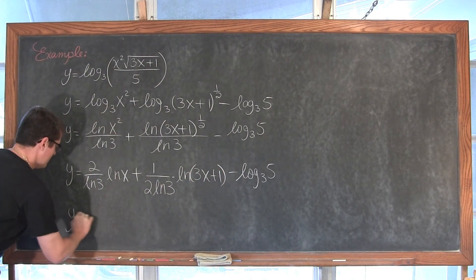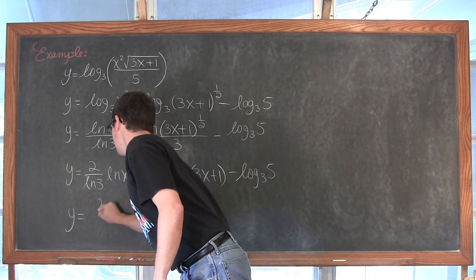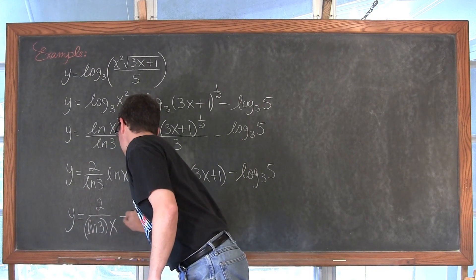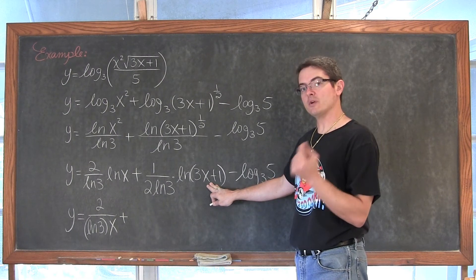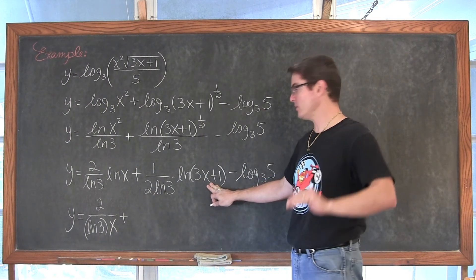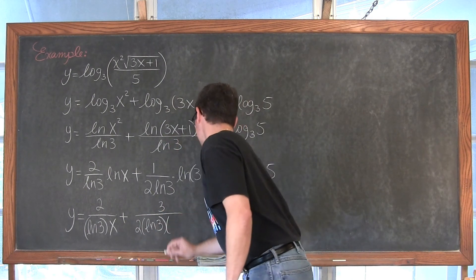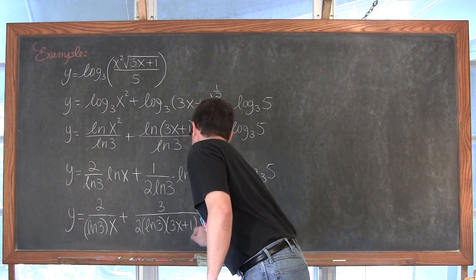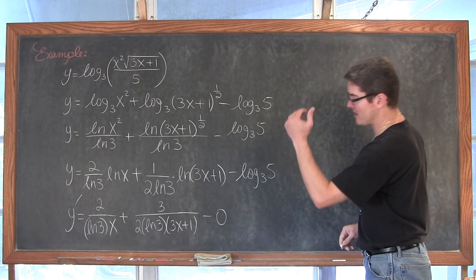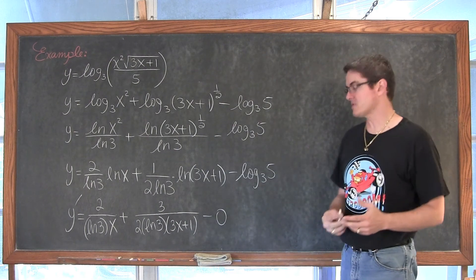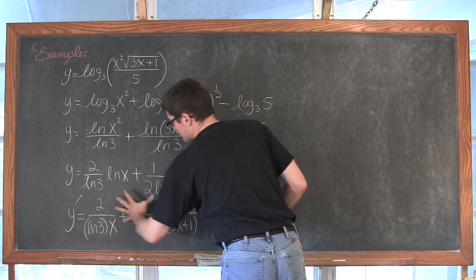So our derivative: the derivative of natural log of x is 1 over x, giving us 2 over the natural log of 3 times x. Then with a u substitution, u is 3x plus 1 and the derivative of this inside function is 3. Doing that u prime over u, we have 3 in the numerator and 2 times natural log of 3 times 3x plus 1 in the denominator. So y prime equals 2 over natural log of 3 times x, plus 3 over 2 times natural log of 3 times 3x plus 1.